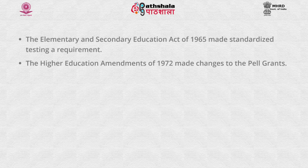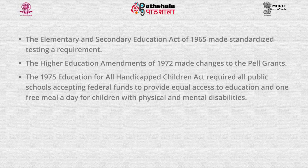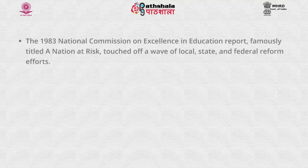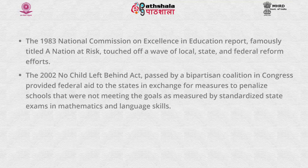The Higher Education Amendments of 1972 made changes to the Pell Grants. The 1975 Education for All Handicapped Children Act required all public schools accepting federal funds to provide equal access to education and one free meal a day for children with physical and mental disabilities. The 1983 National Commission on Excellence in Education report, famously titled A Nation at Risk, touched off a wave of local, state and federal reform efforts. The 2002 No Child Left Behind Act, passed by a bipartisan coalition in Congress, provided federal aid to states in exchange for measures to penalize schools not meeting goals as measured by standardized state exams in mathematics and language skills.